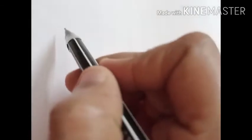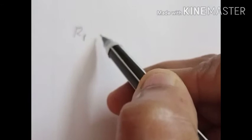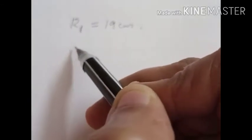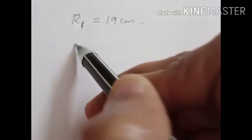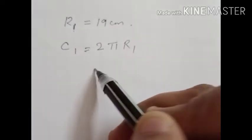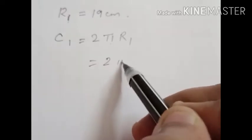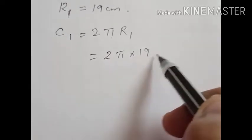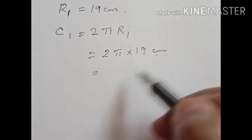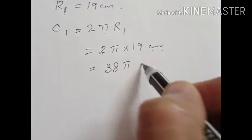Radius of the first circle, R1, is given as 19 cm. We have to find the circumference C1 equal to 2 Pi R1. No need to substitute the value of Pi here because we have to add them. So, 2 Pi into 19 gives 38 Pi cm.